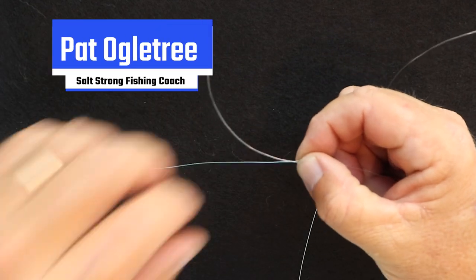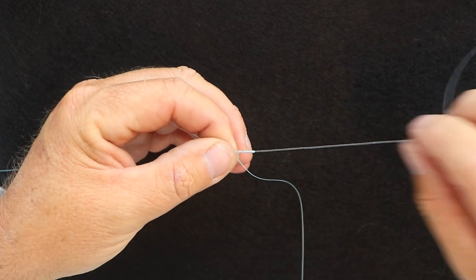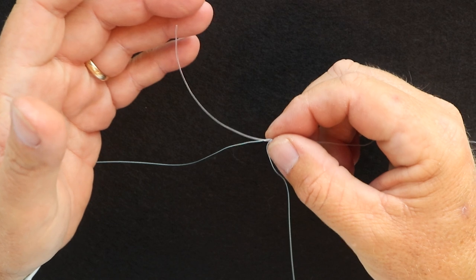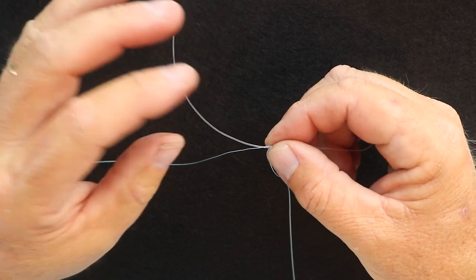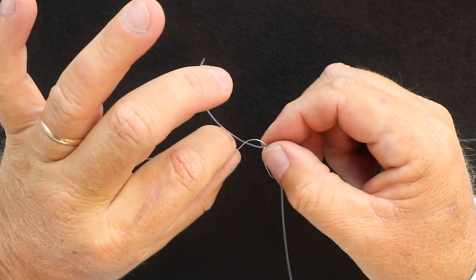Hey, what's up, SaltStrong family? This is Pat Ogletree. In this video, I'm going to show you a way that you can finish your FG knot so it's not going to come unraveled. It's super strong, and you'll even be able to cast it through the guides. So I'm going to show you the setup that I've got right here.